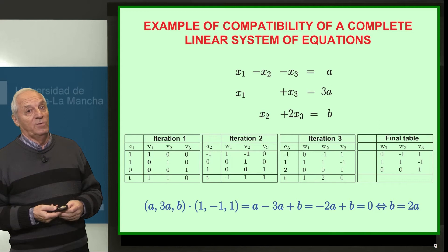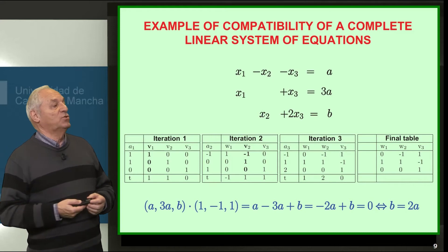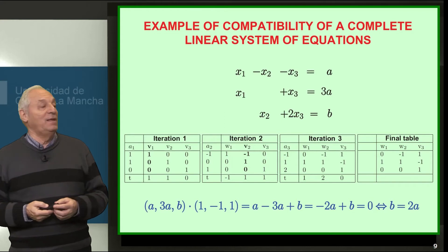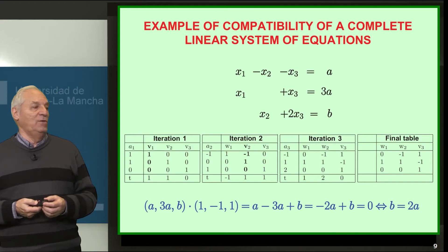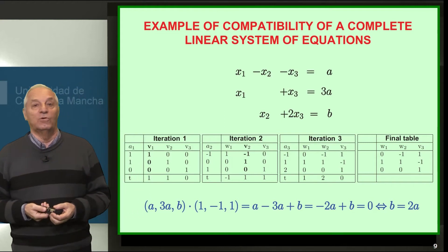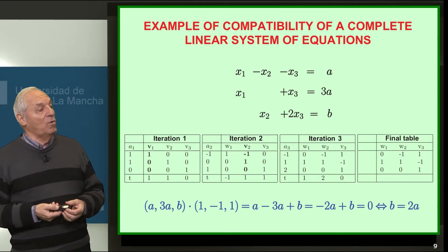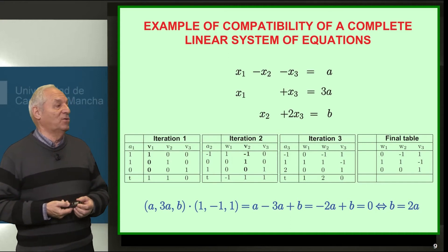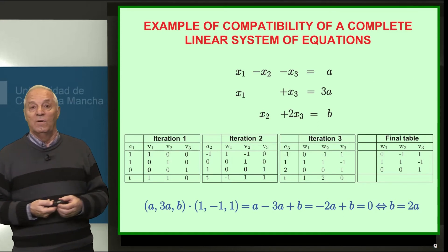We were able to pivot twice, but in this last iteration the scalar product of A3 and V3 is 0, so we cannot pivot, and we copy the same matrix into the final table. The conclusion is that the orthogonal subspace to the one generated by the column vectors is found by eliminating W1 and W2 and keeping V3. The subspace orthogonal to the column space is therefore generated by the vector (1, −1, 1).